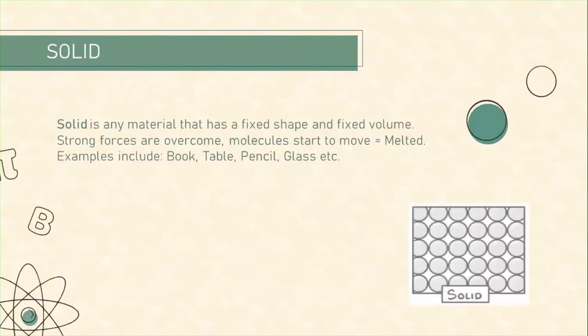Solid is any material that has a fixed shape and fixed volume. Its particles are held by strong forces of attraction called bonds. The particles vibrate to and fro about their fixed position. When strong forces are overcome, molecules start to move or it can be called melted. For example, book, table, pencil, glass, etc.